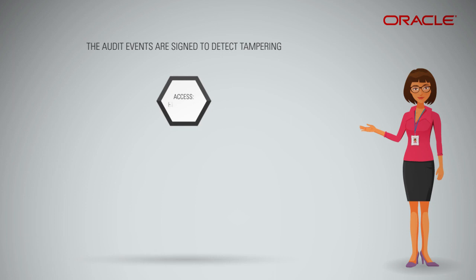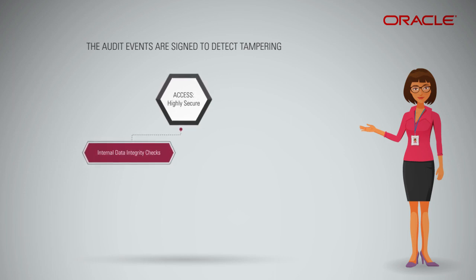The access to audit events is highly secure. Internally, the audit service performs data integrity checks to make sure that the events are delivered as recorded by the service infrastructure. By default, the audit service is turned on for every tenant. You cannot turn it off.